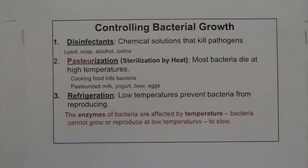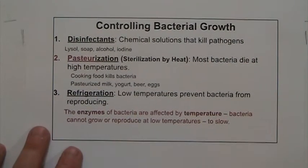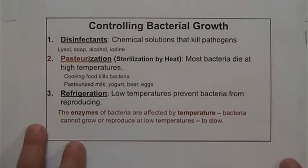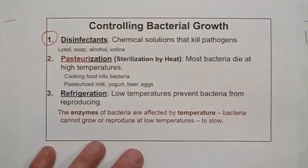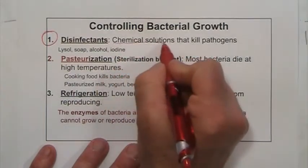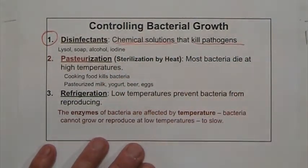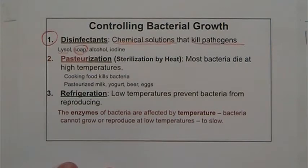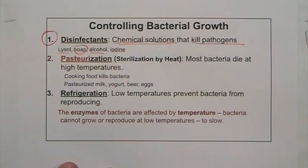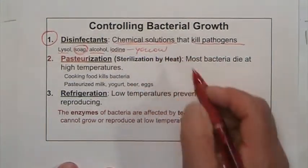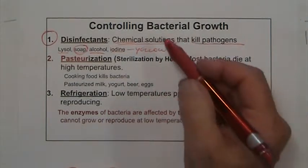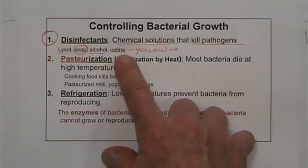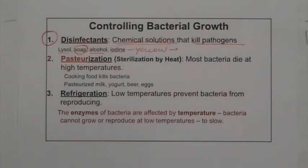To control bacterial growth, we use disinfectants — chemical solutions that kill pathogens, usually by destroying their cell wall or membrane. You are familiar with Lysol, regular soap which dissolves bacterial membranes, alcohol, and iodine — the yellow substance put on skin before surgery that is a very good disinfectant.